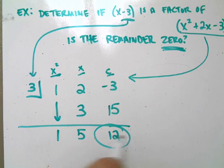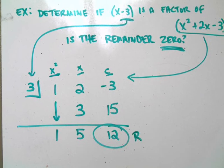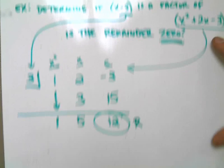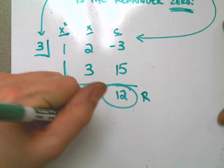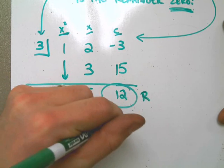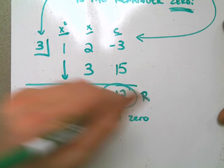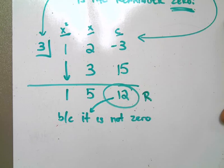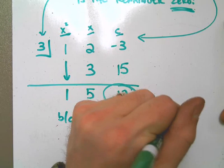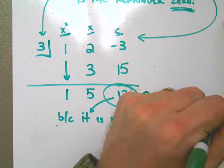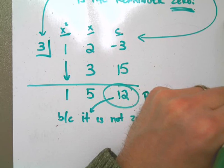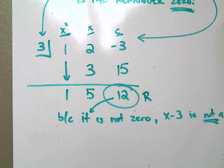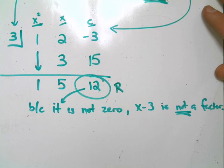This, the last term, is always the remainder. And what I know, because it is not 0, in other words, the 12, because that is not 0, x minus 3 is not a factor. That's what I know.